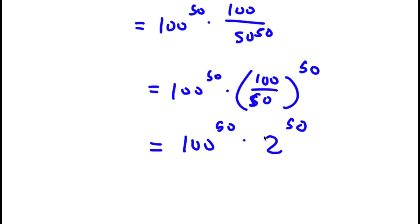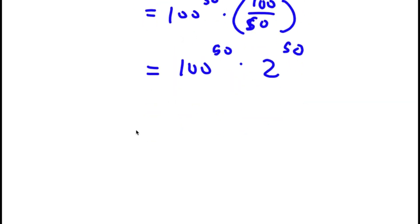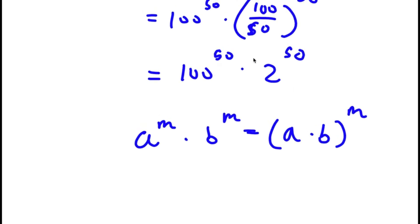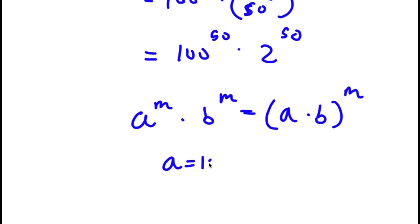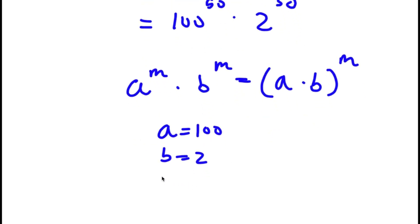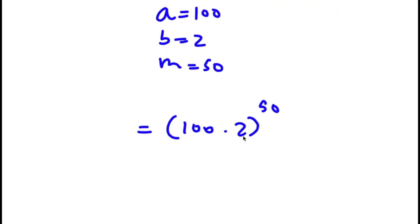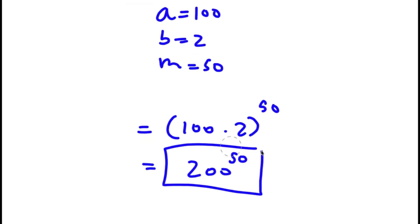Now, using the property that a to the power of m times b to the power of m equals a times b to the power of m, I have 100 to the power of 50 times 2 to the power of 50, where a is 100, b is 2, and m is 50. So this equals 100 times 2 to the power of 50. Well, 100 times 2 is simply 200, so I'm left with 200 to the power of 50. This is my answer.